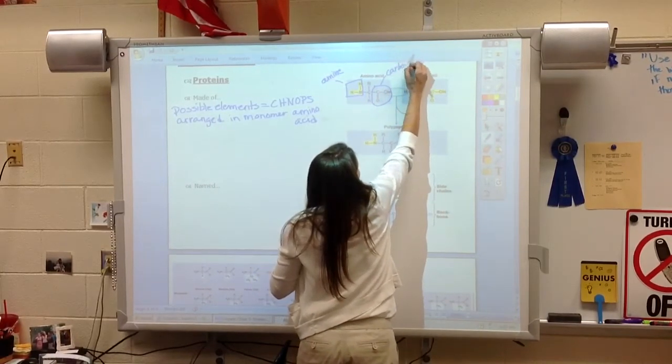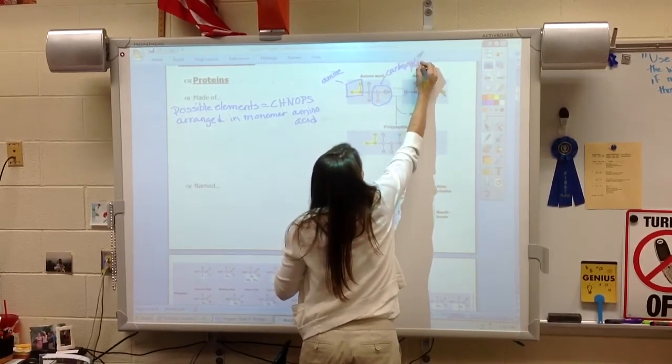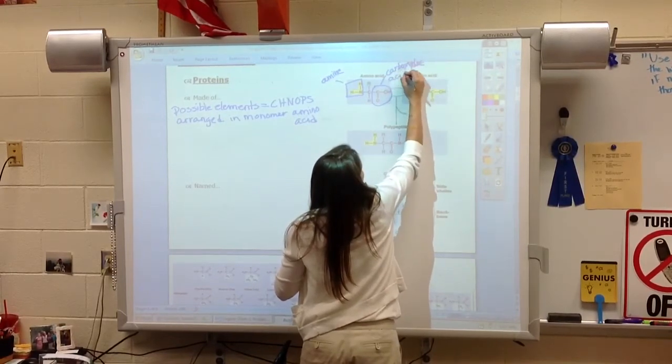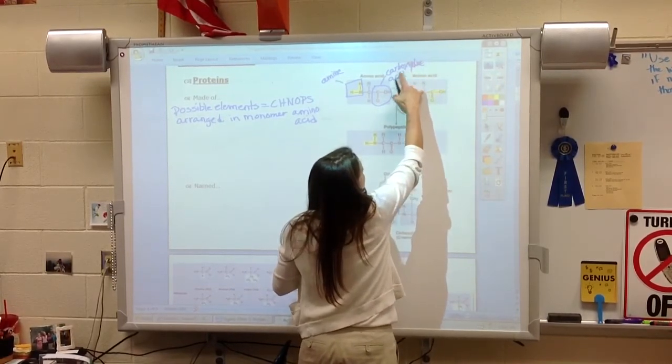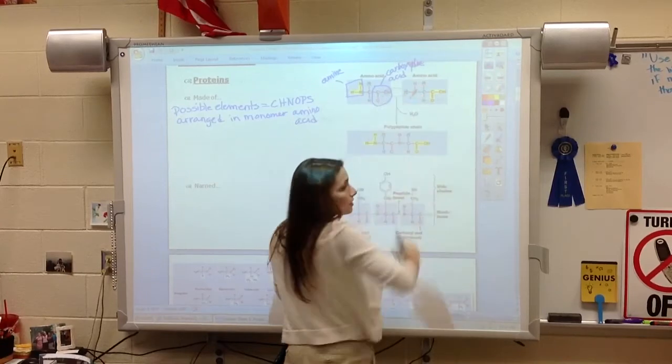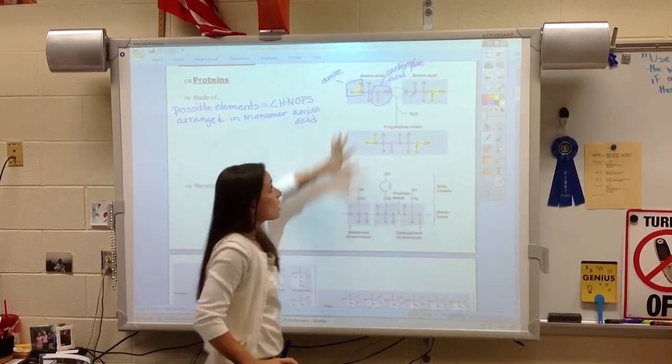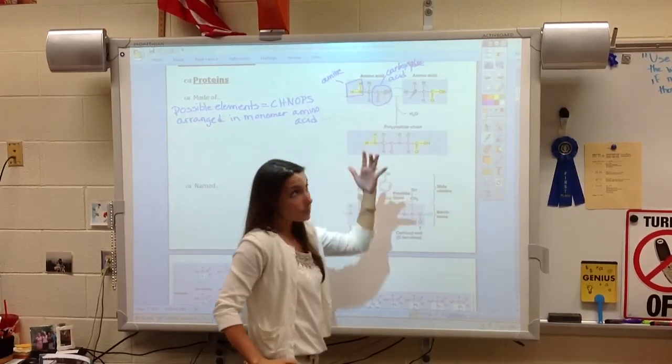If you remember, sometimes they are called carboxylic acid. So carboxyl or carboxylic acid. That's where the name amino acid comes from.